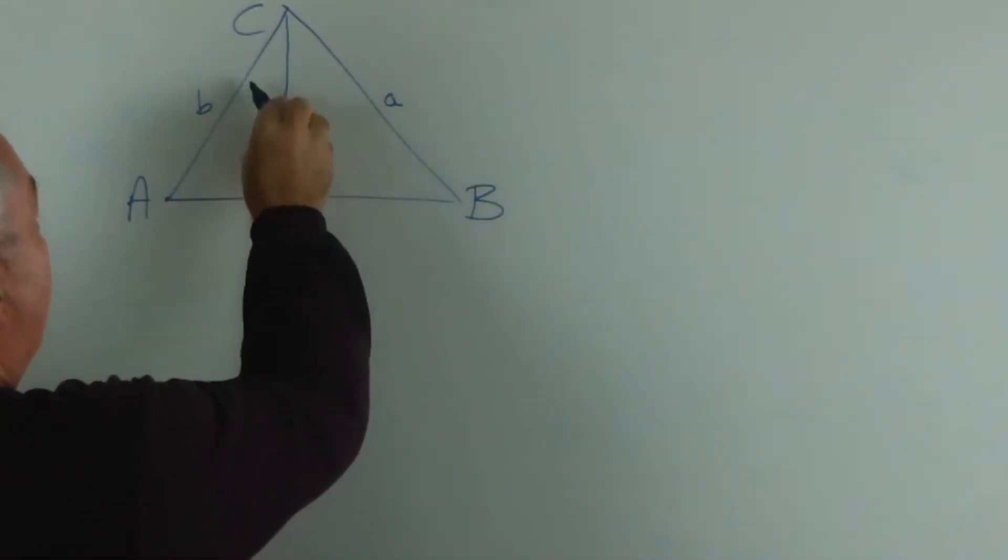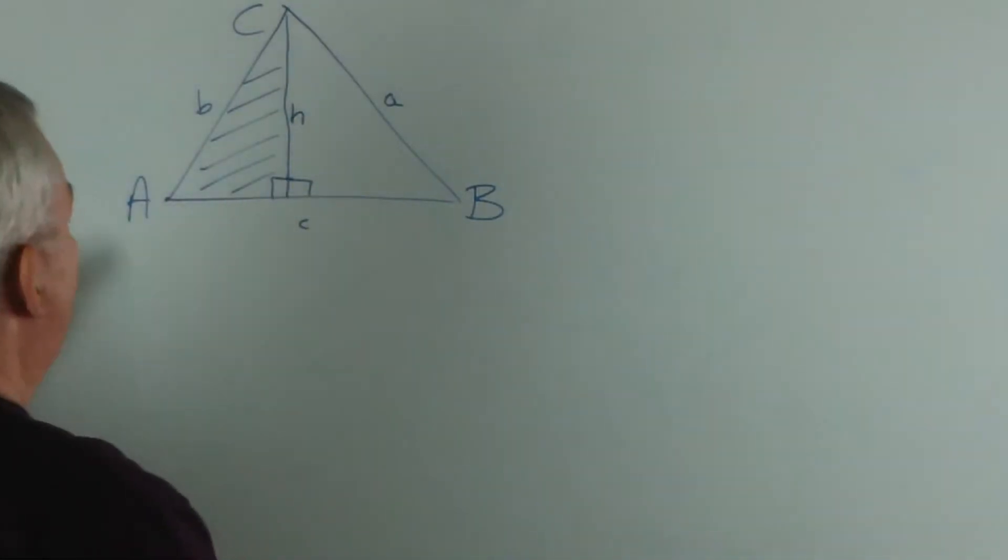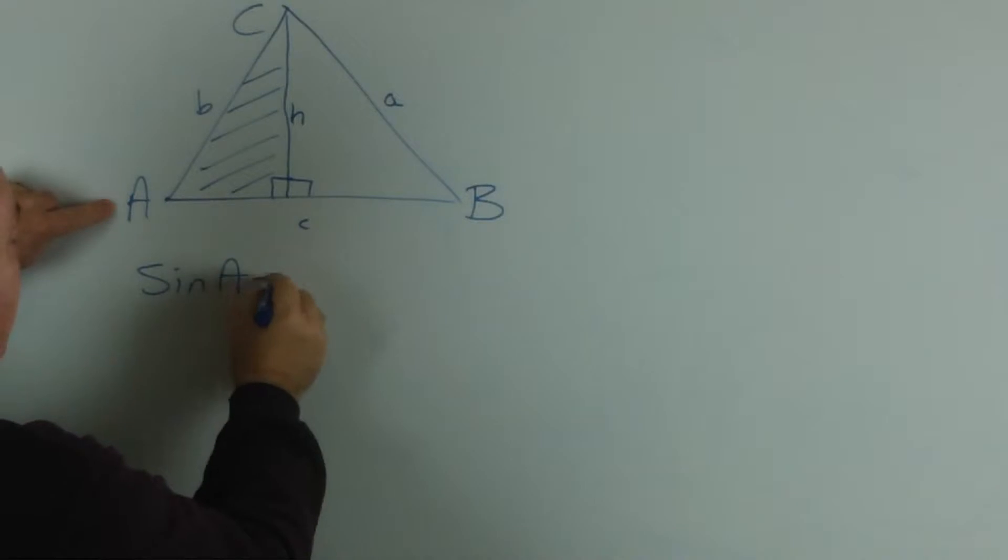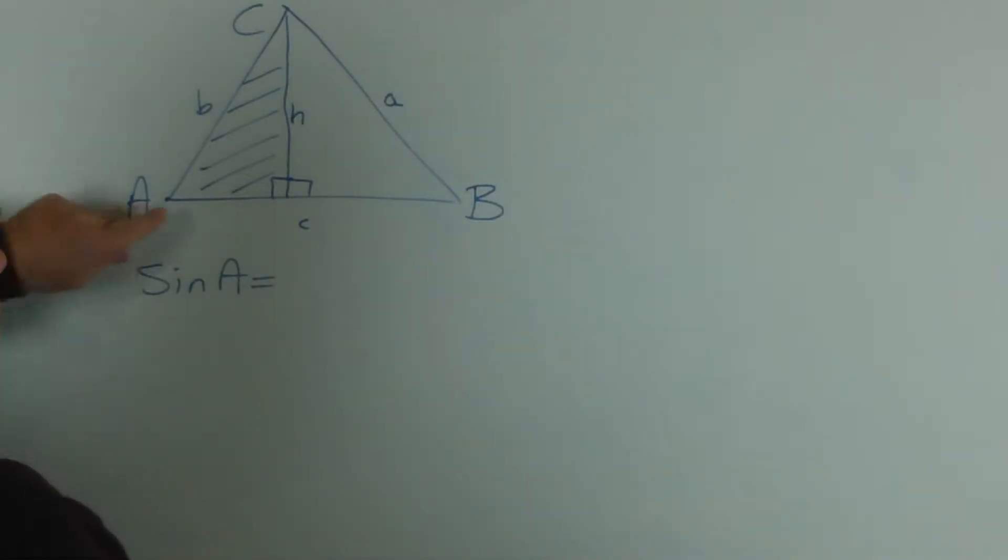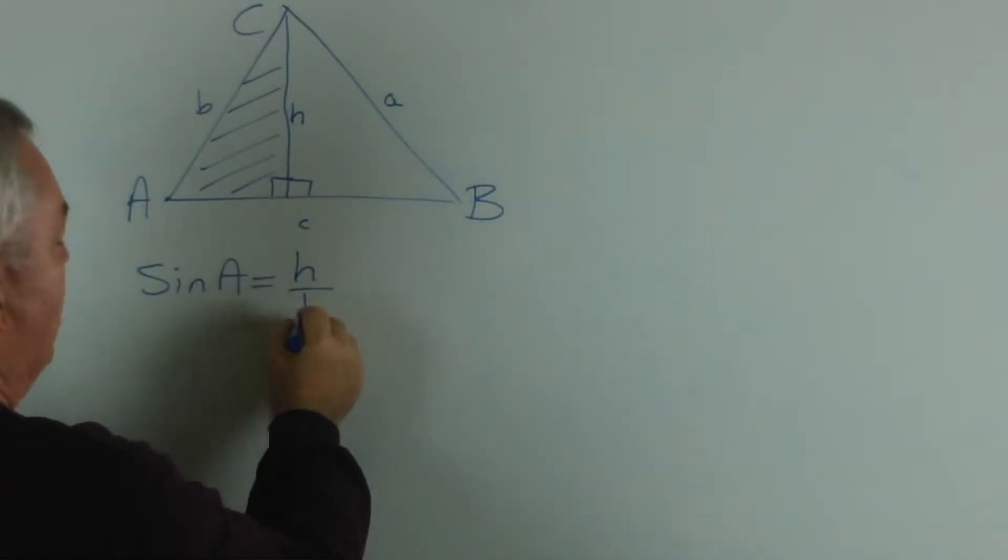Now, in this triangle here, what is sine A? Well, we have a right angle triangle. The sine is opposite over hypotenuse, which is h over b.